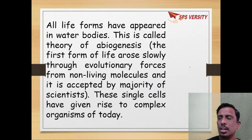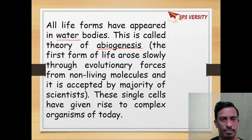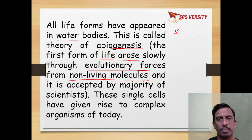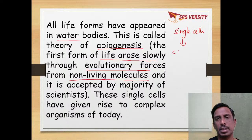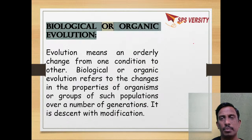Cell origin and life originated in water. This theory is called the theory of abiogenesis — life came through evolutionary forces from non-living molecules. From single cells, it led to formation of complex multicellular organisms. At present, the complex multicellular organisms have evolved from the single cell.